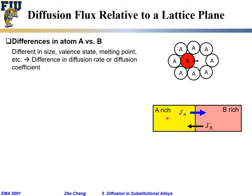Let's say we have a single-phase region for simplicity: A diffuses downhill towards the right side, B diffuses towards the left side. Now let's think about the so-called atom flux — the flow of atoms per unit area — with respect to a chosen lattice plane.